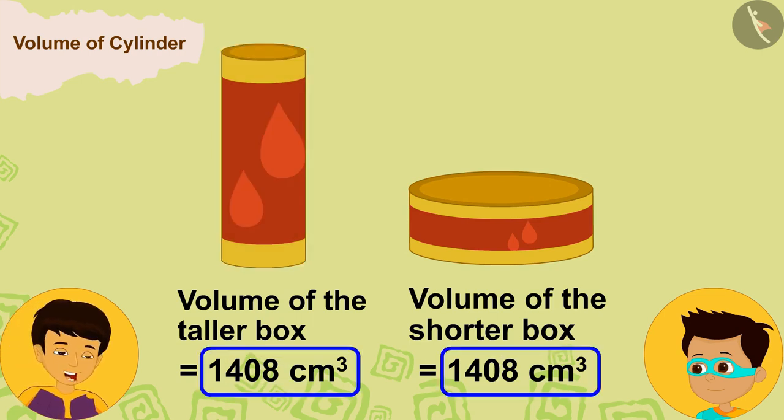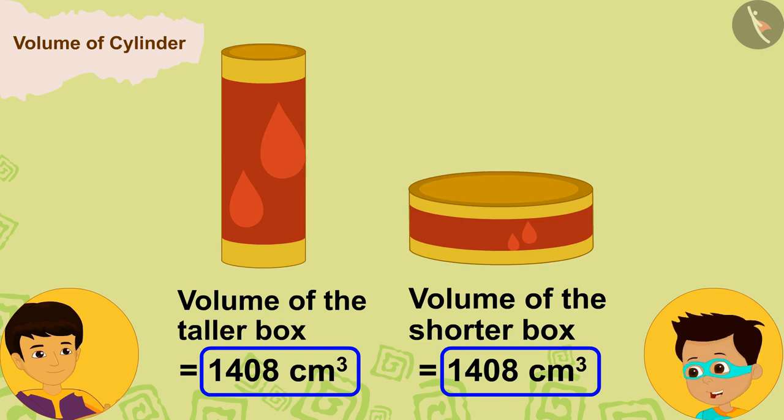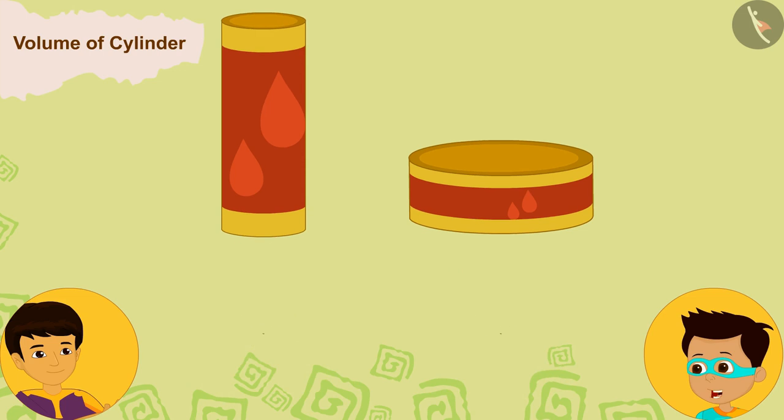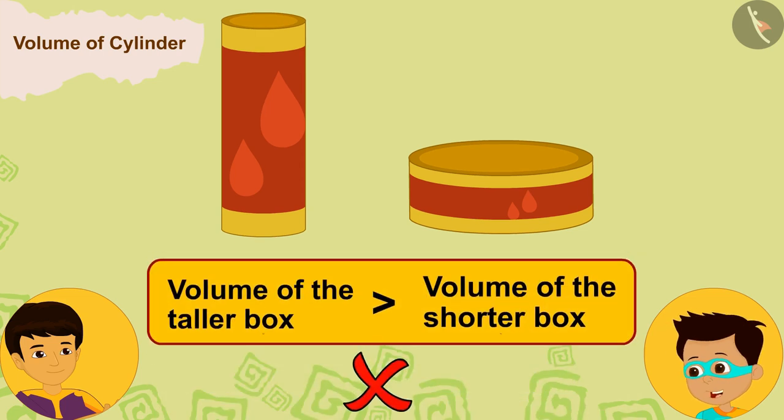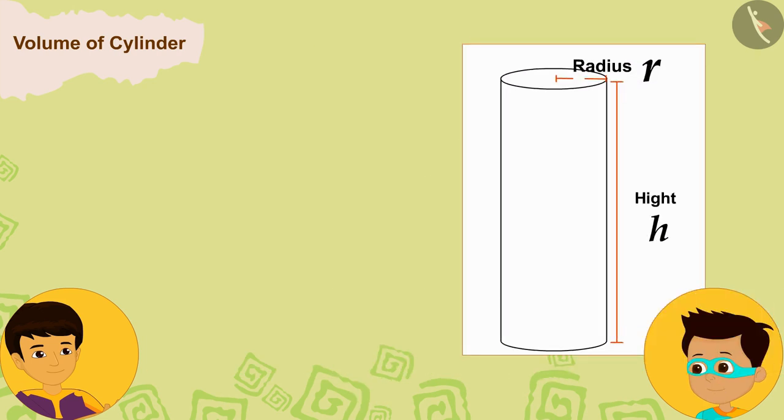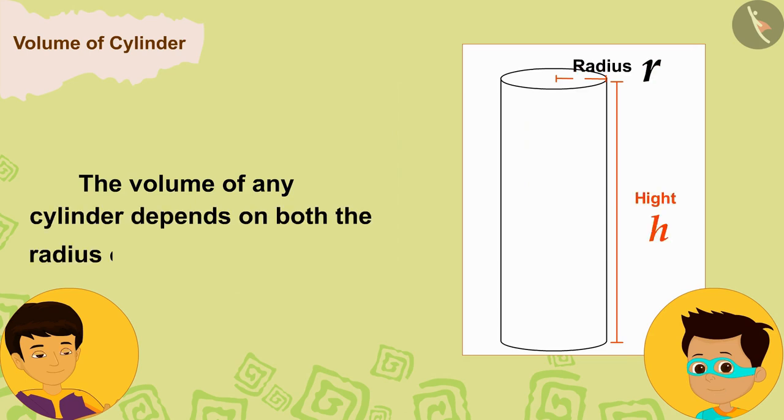You are right, it is not necessary that the volume of a cylinder that is taller is always more than the volume of a cylinder that is shorter. Now I understand that the volume of any cylinder depends on both the radius of the base and its height.